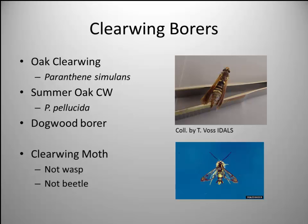Someone asked me about a clearwing borer today. You can see in the bottom right it looks a lot like a wasp - but it's not. If you open the wings you can see they're clear, so it's actually a moth. There's an oak clearwing borer, a summer oak clearwing borer, a dogwood borer, and a newer concern on ninebark or physocarpus - we're seeing a lot of dogwood borer on new physocarpus plantings, so watch for that. The clearwing moth is not a wasp, not a beetle - but it is a borer of trees.